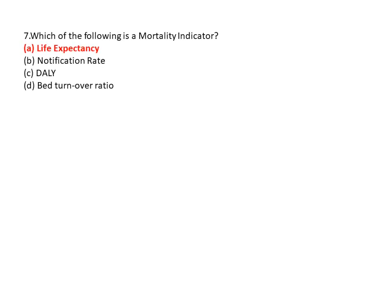Question 7: Which of the following is a mortality index indicator? Option A is life expectancy, option B is notification rate, option C is DALY, and option D is bed turnover rate. So option A is the correct answer — life expectancy.